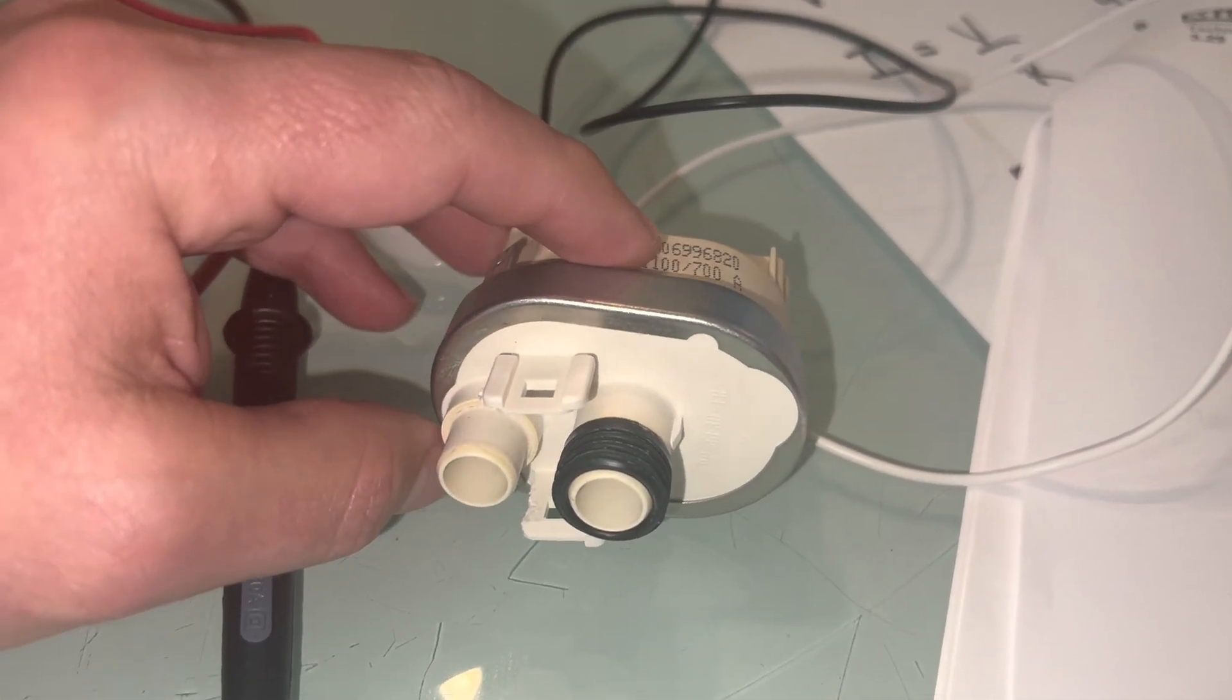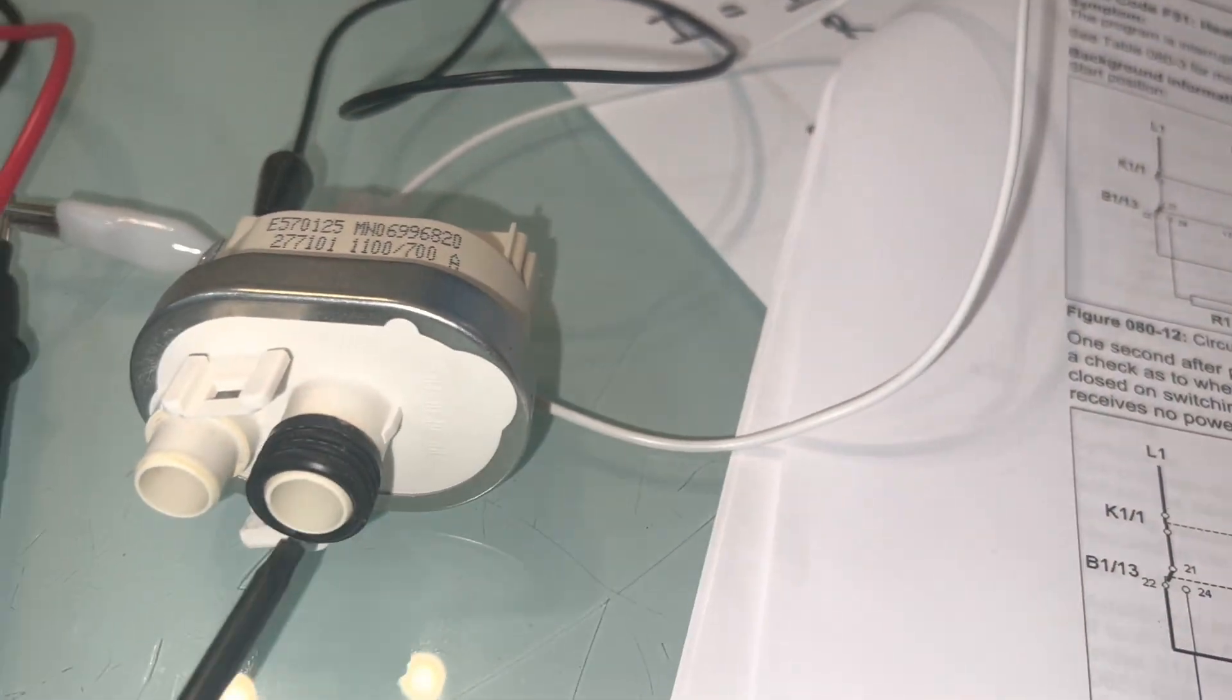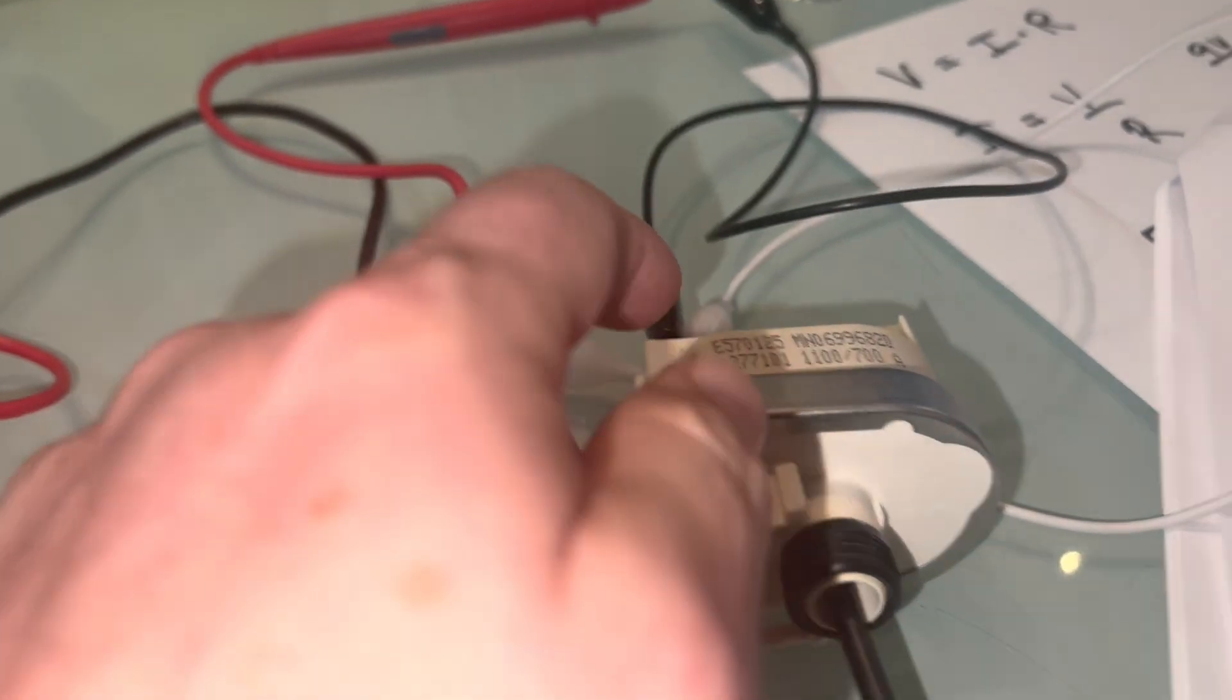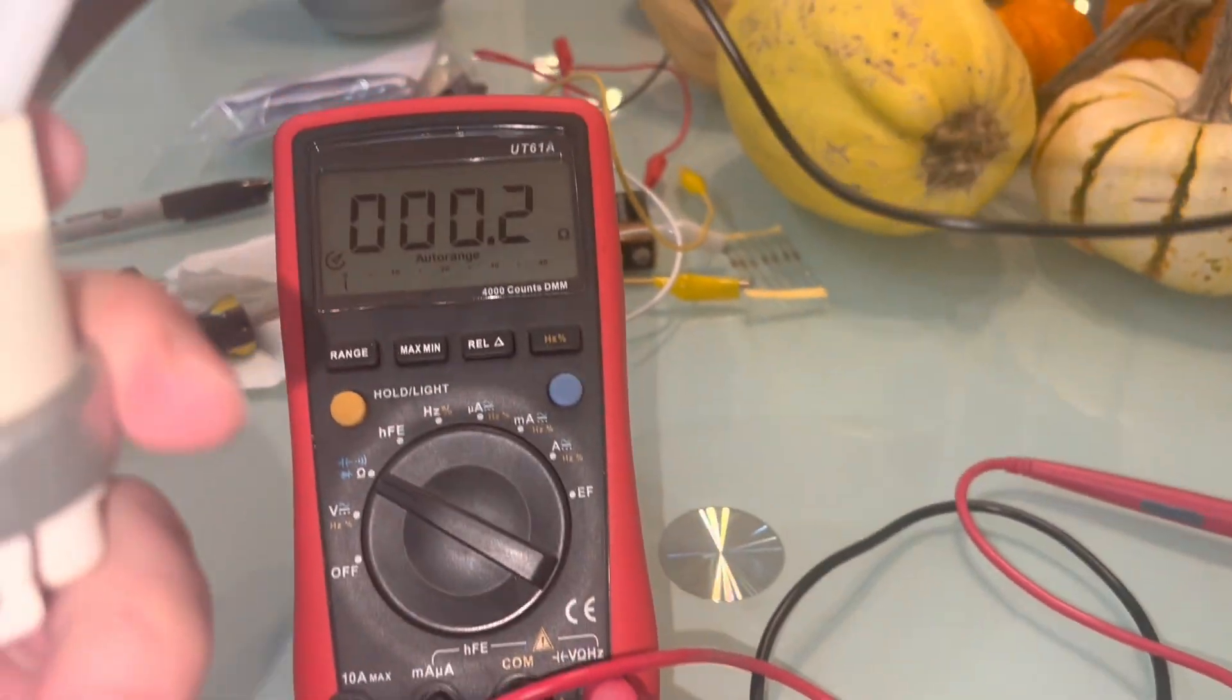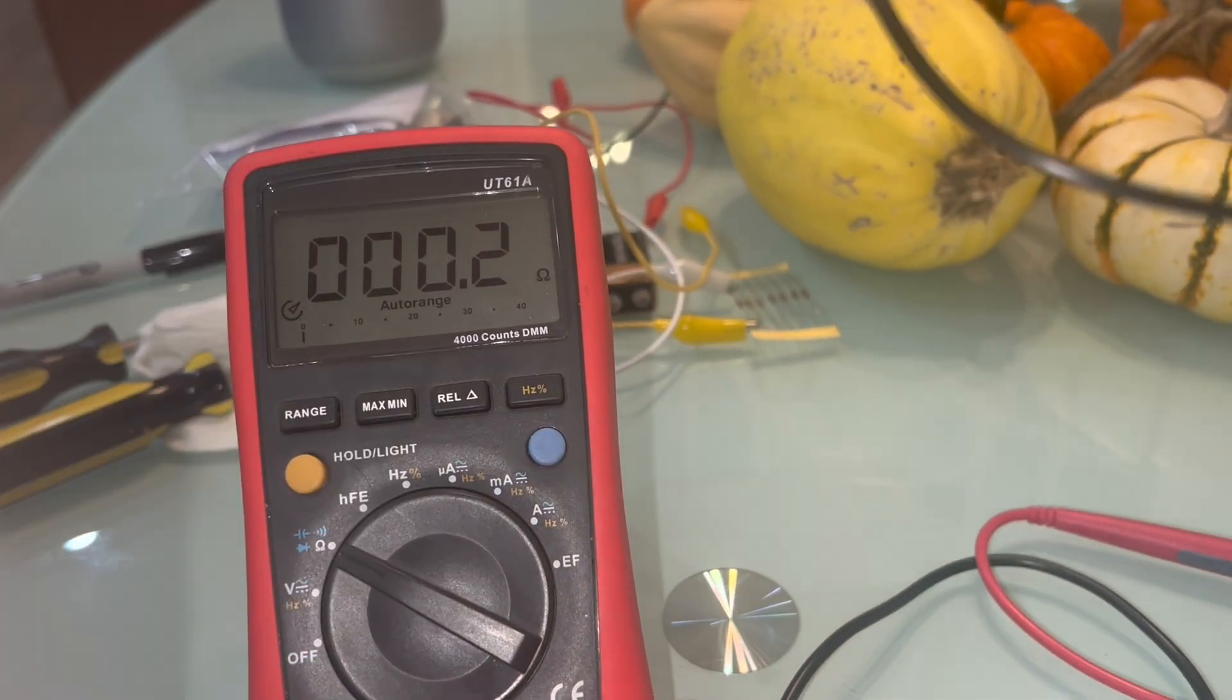After it thawed out, I was able to depress it again. And now instead of getting the seven to eight mega ohms when I press it, I'm getting a lot less.